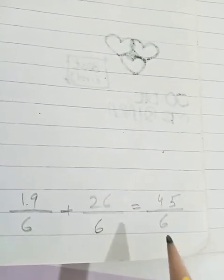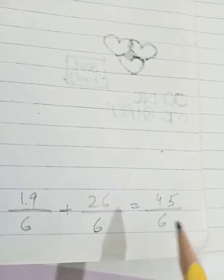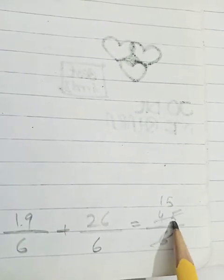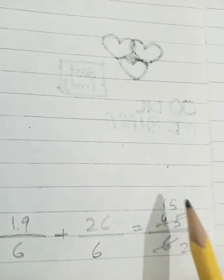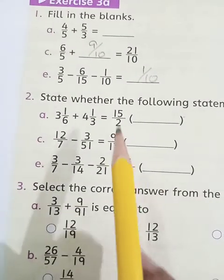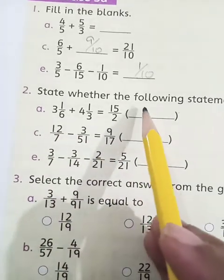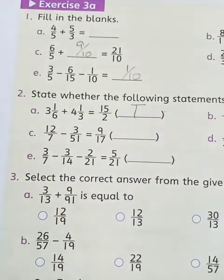Now 45 upon 6 can be reduced by dividing 3. So 3 times 2 is 6, 3 times 1 is 3. Then 4 minus 3 is 1. We will put 1 here. It will be 15. 3 times 5 is 15. So we got 15 upon 2. So here 15 upon 2 is written. It means that this statement is true.